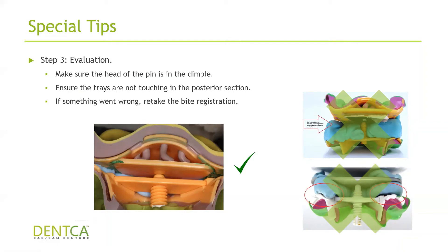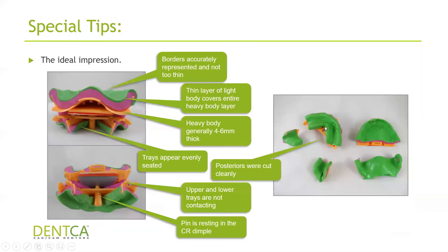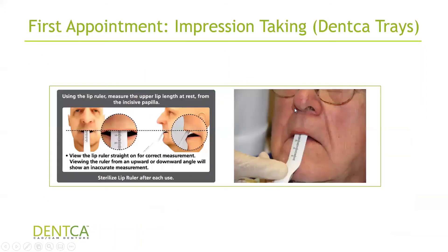When you take it out, examine your impression and evaluate it — make sure the head of the pin is still on the dimple, and that you don't see any separation. Separation happens because the patient bit too hard, causing the tray to bend and the impression material to copy that. If you see issues where the pin is not in the dimple or you see a gap, it's better to just retake the impression. You'd rather spend another 30 seconds retaking that bite than spending an hour and a half grinding on that try-in. The upper and lower trays should be parallel, not touching one another, with the head of the pin in the dimple, posterior attachments in place, and borders looking good.